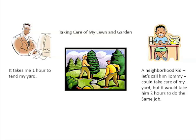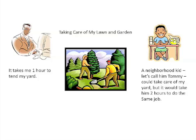Well, Adam Smith, back in the late 1700s, would say that I had absolute advantage. Absolute advantage goes to the party who can do it better, quicker, and cheaper — and in that case, that's me.